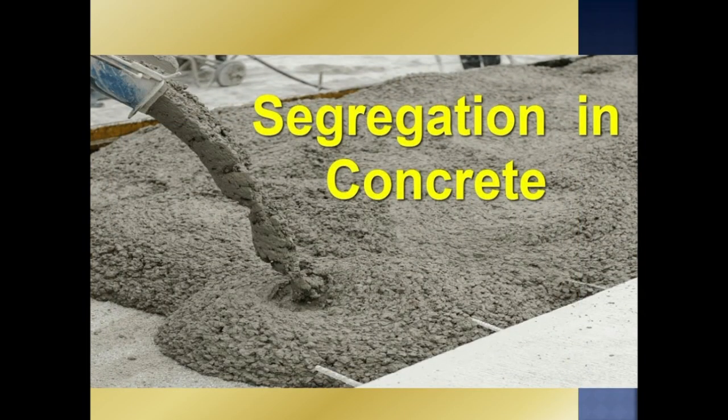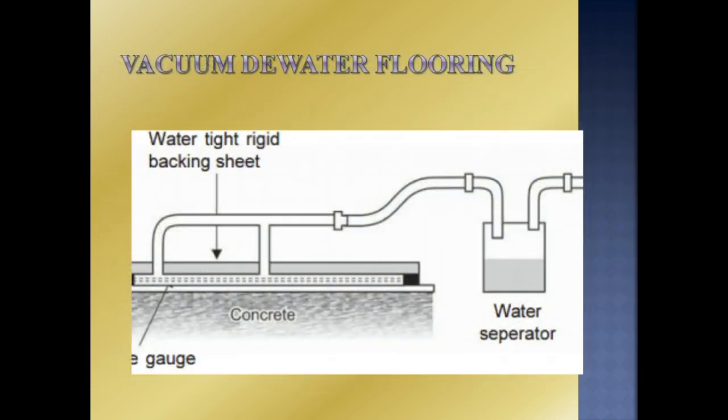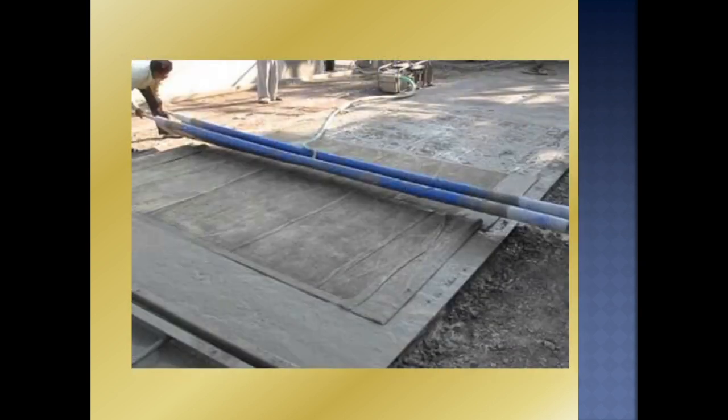Medium workable or low workable concrete is the better practice when using the surface vibrator. The surface vibrator acts as a vacuum divider, and this is the main use of the surface vibrator.